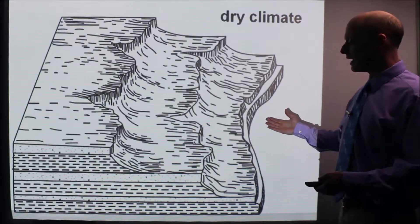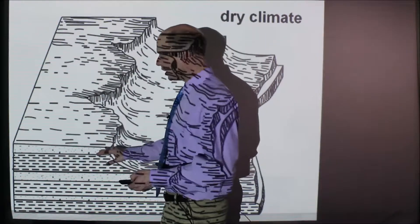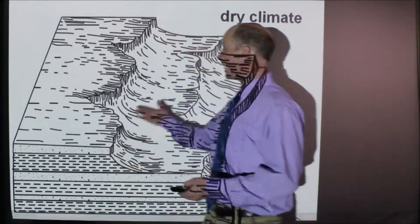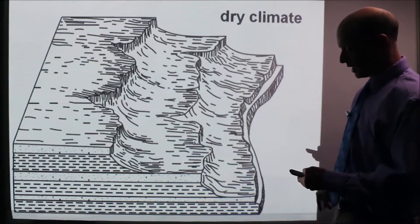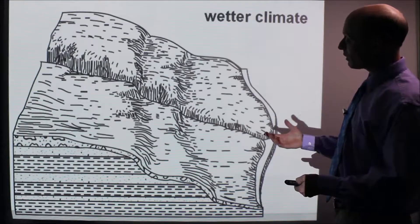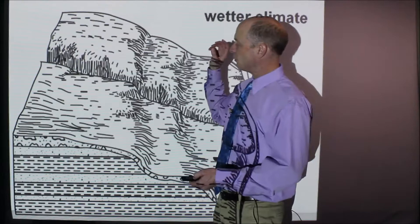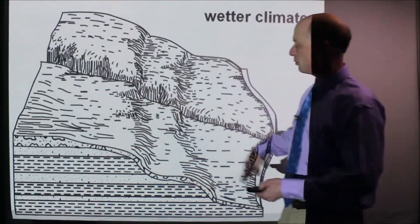And in this case, so a dry climate, here you have a plateau and a dry climate will kind of look like this. Notice how kind of sort of angular and sharp these layers are.